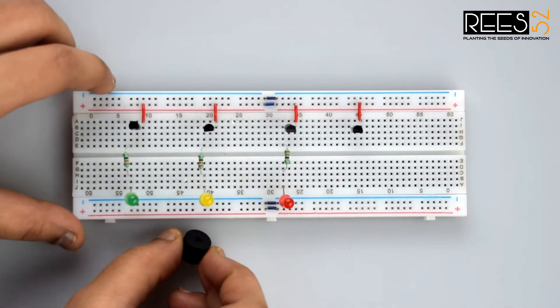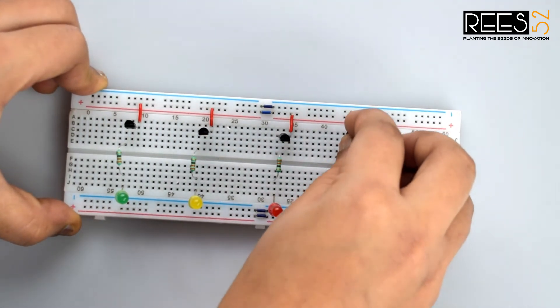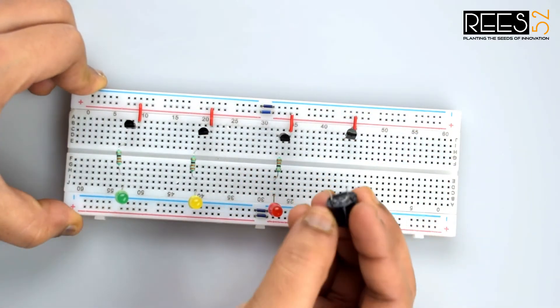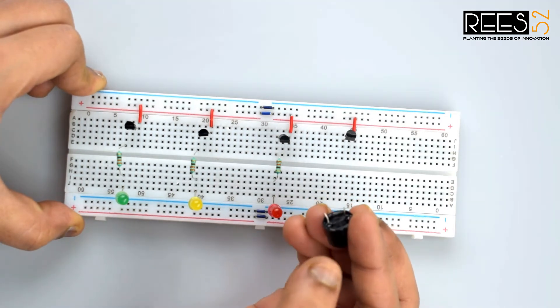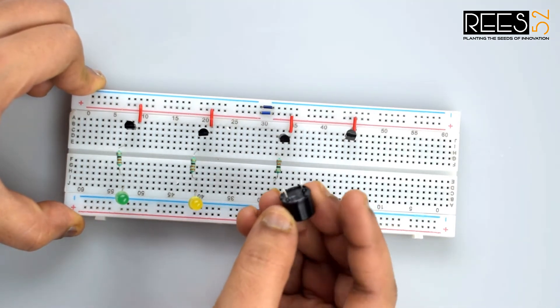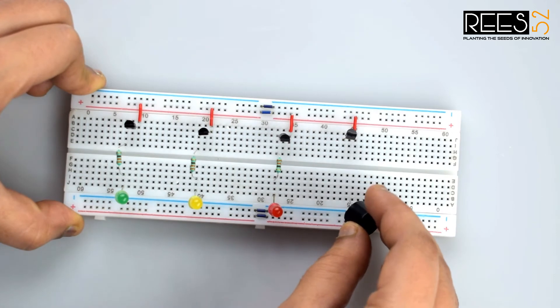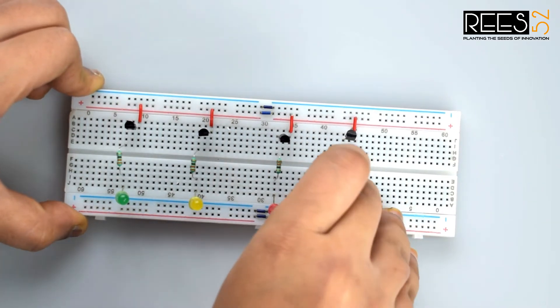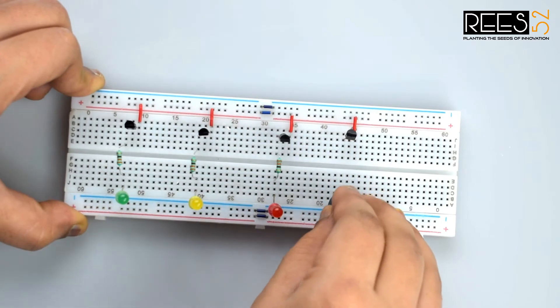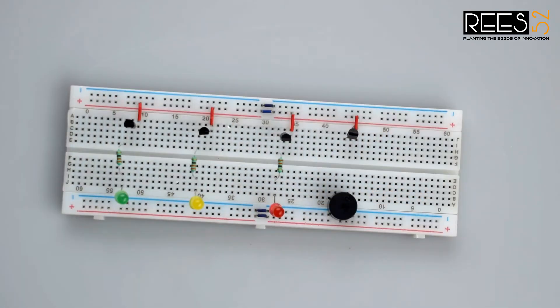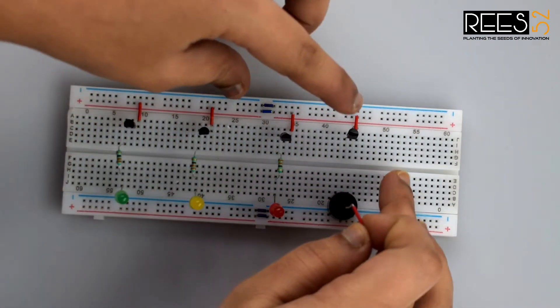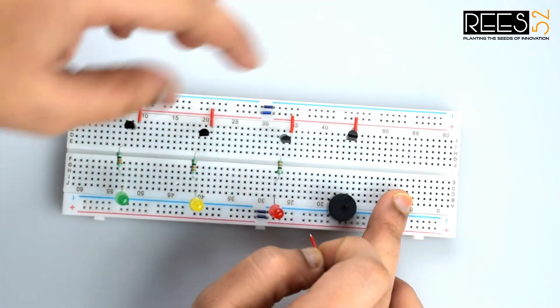Now attach the buzzer on the breadboard. The negative terminal of the buzzer must be on the negative side that is negative rail on the breadboard and the positive side of the buzzer must be in the different row for further connections. Now connect the collector pin of the transistor Q4 to the positive terminal of the buzzer.